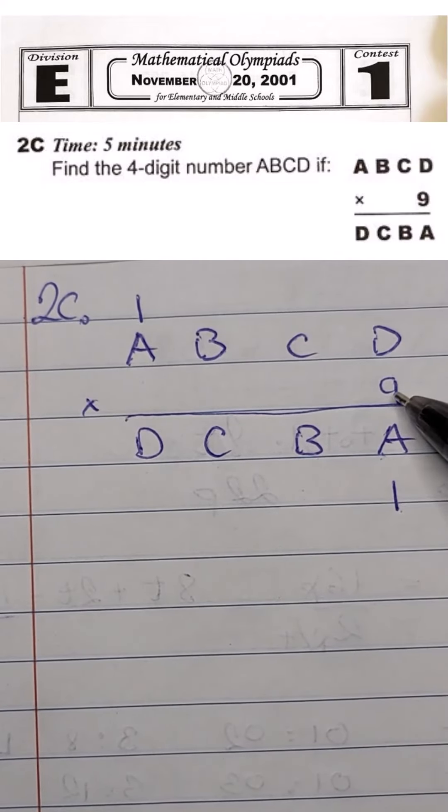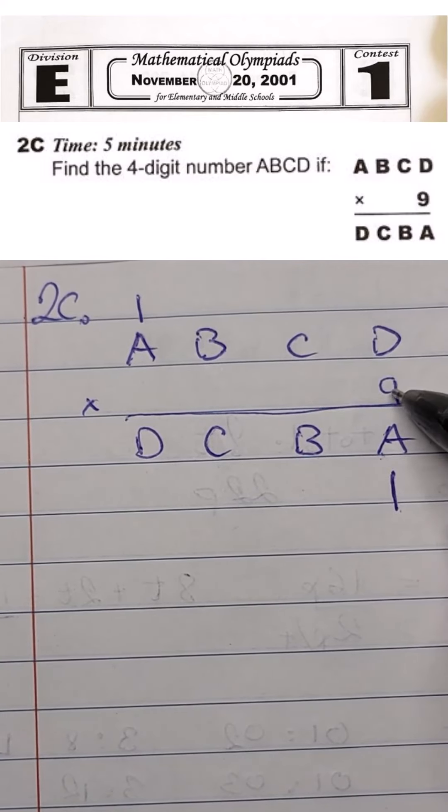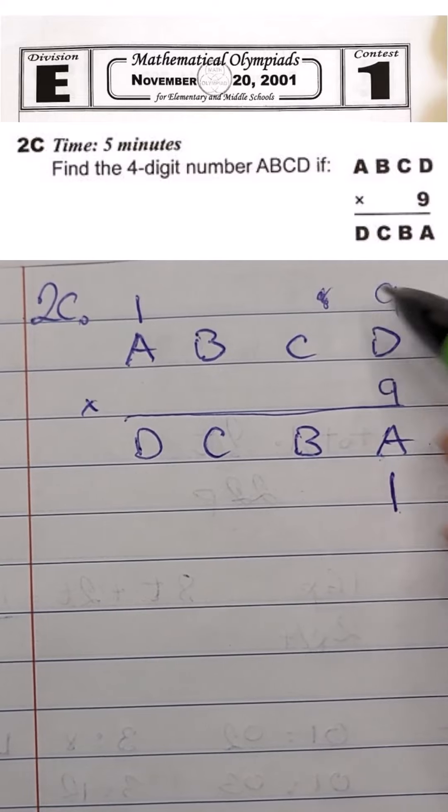So now we ask the question, 9 times what number would give us the ending of 1? We know 9 times 9 equals 81. We write the 1, we carry the 8. Therefore, D is number 9.